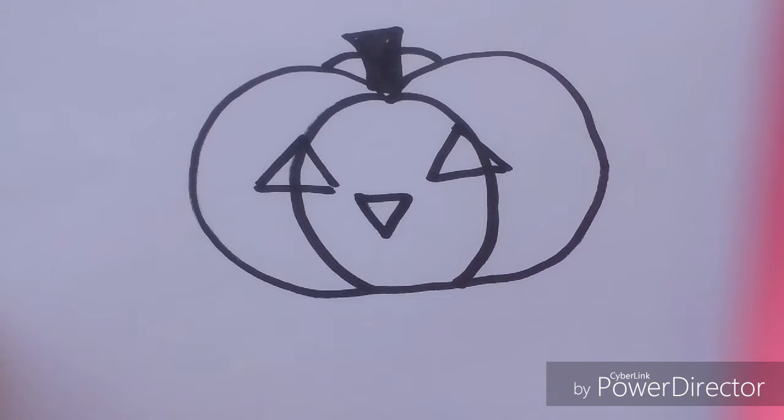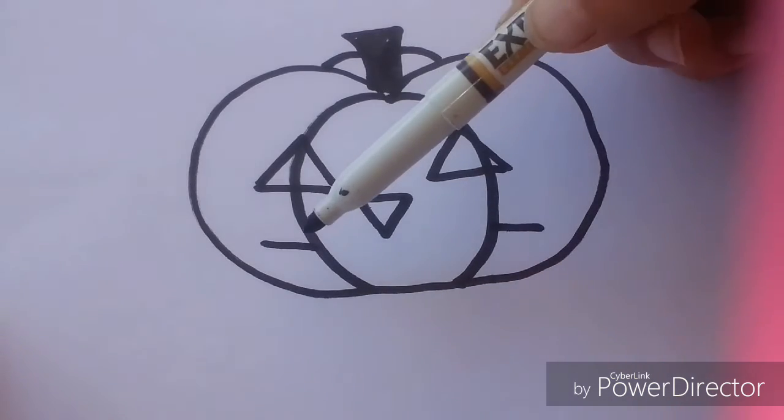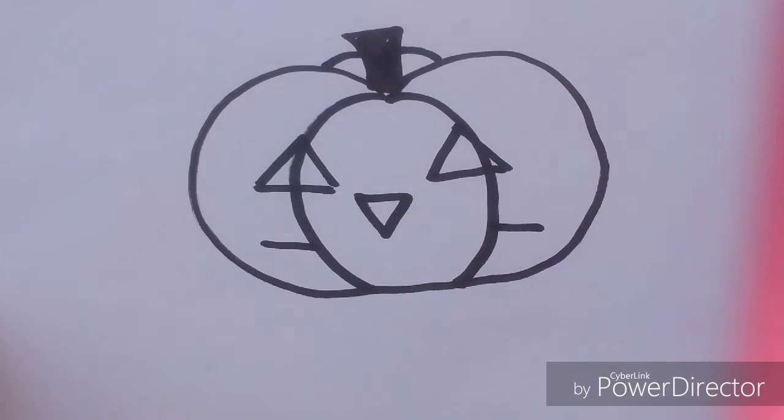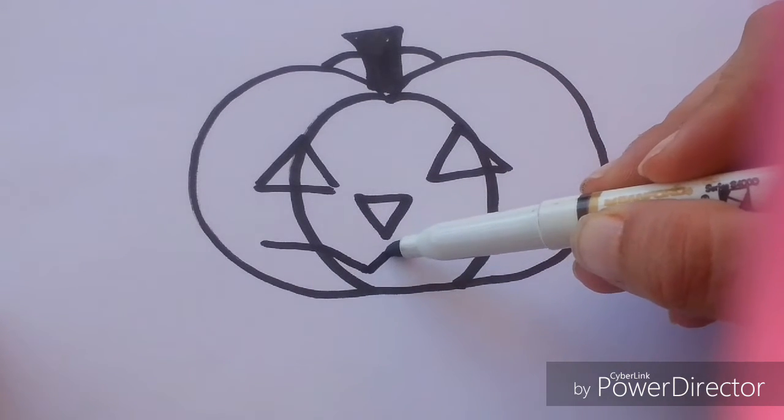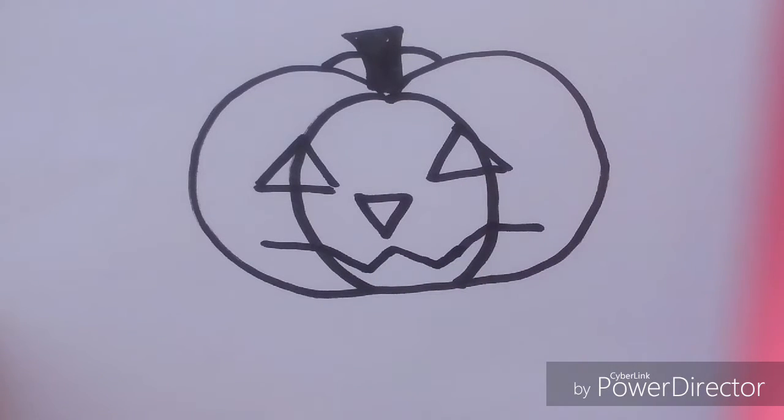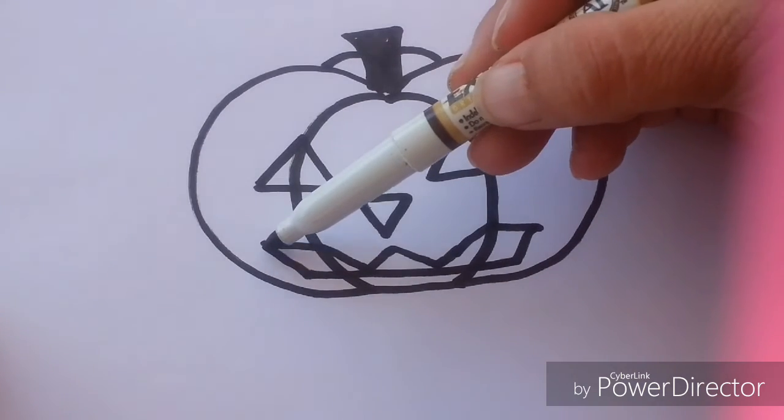We can do the mouth however you want, but I chose to draw two lines underneath the eyes, and two lines going down from those, with an upside-down V below the nose. I'll just connect the ends of these lines, like this, to finish the mouth.